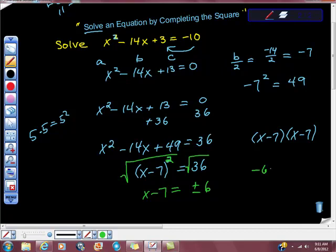Why? Because negative 6 times negative 6 is equal to positive 36. And, of course, we know that positive 6 times positive 6 is also equal to 36. So we have to do this both ways, right?